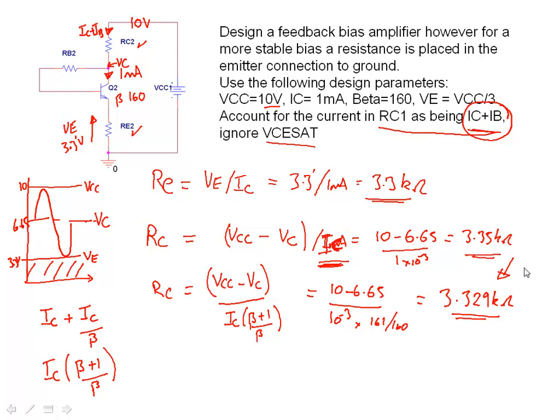Now let's calculate RB. Well RB is quite simple. We're starting this time instead of from the supply where we did the constant current bias, we're now starting from the collector load. So we're starting from here. We want the voltage on this node, we want the voltage on this node